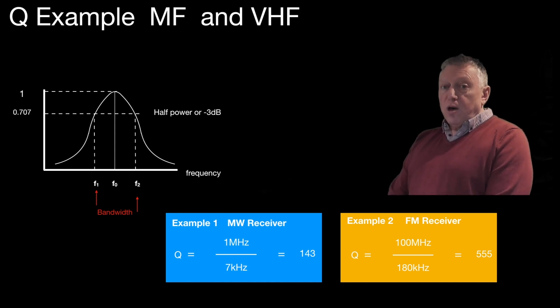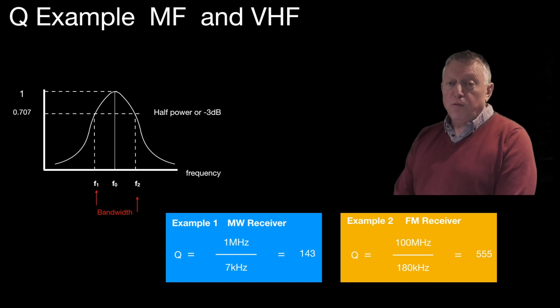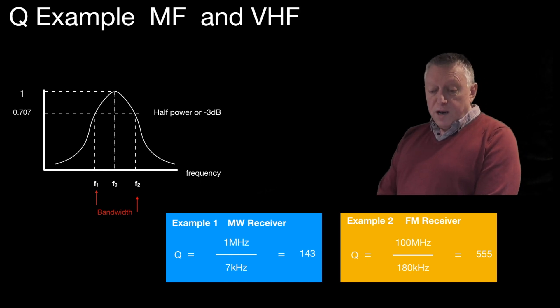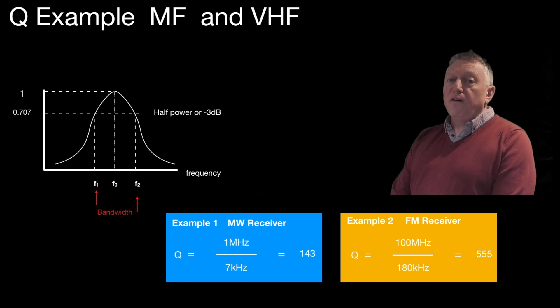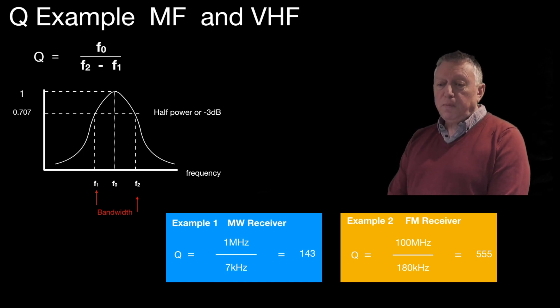But in example 2 at VHF, if we were looking at 100 megahertz in the VHF band, over 180 kilohertz bandwidth for a music FM transmission, you might need a Q of 555, and that would be very difficult to achieve. Remember that Q equals F0, the centre frequency, over the bandwidth F2 minus F1, measured at the half power or 3 dB points.